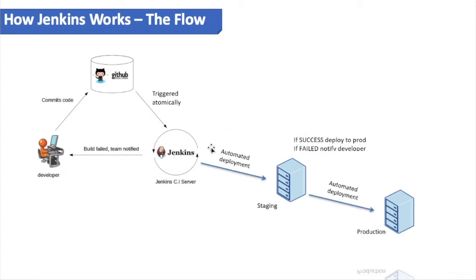If the build fails or there are some bugs, notifications will be sent to the developer or development team. The developer will try to fix the bug based on the issues and again commit the code to the GitHub remote repository. This triggers the build process again automatically. This entire process is called continuous integration.